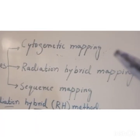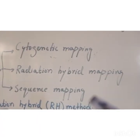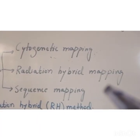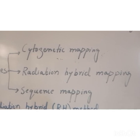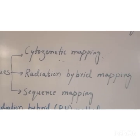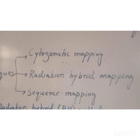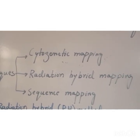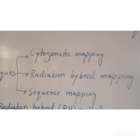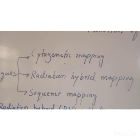So these are the three methods — cytogenetic mapping, radiation hybrid mapping, and sequence mapping — that are used for eukaryotic chromosome mapping.